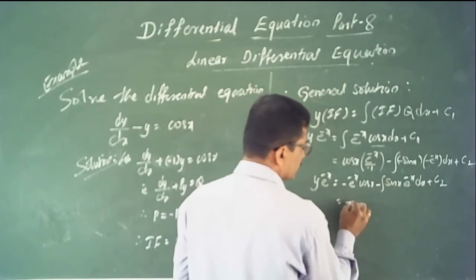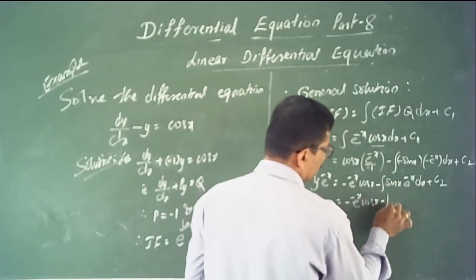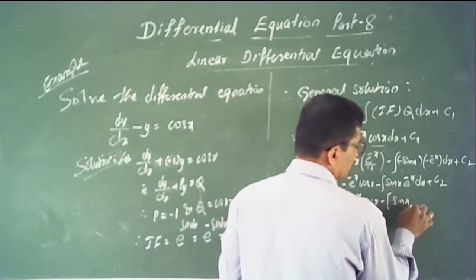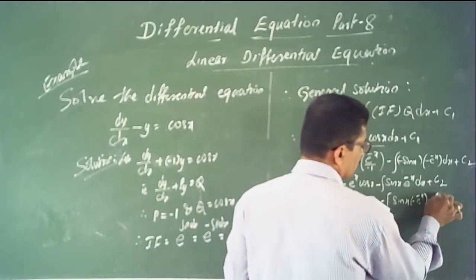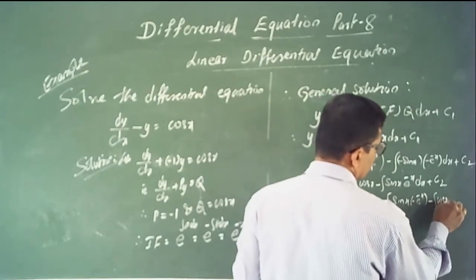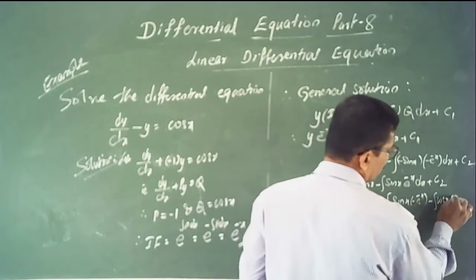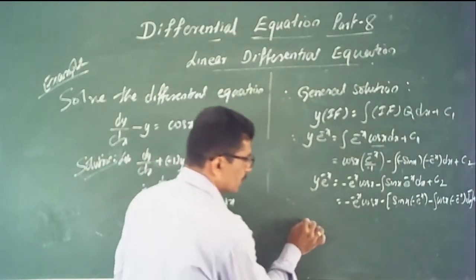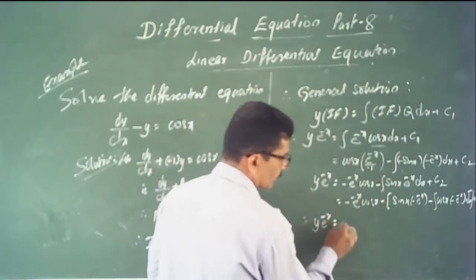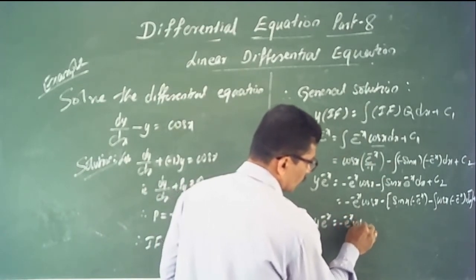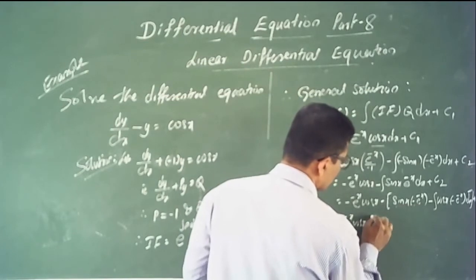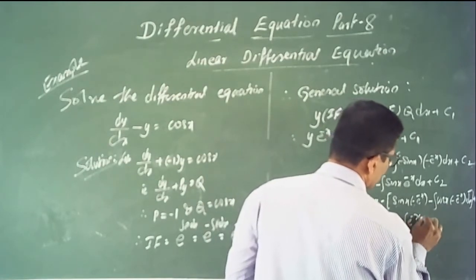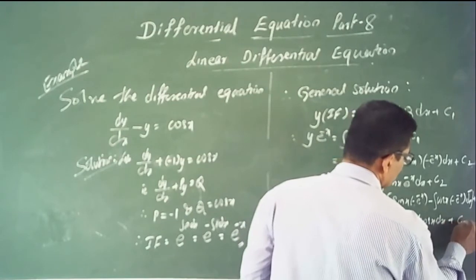Apply integration by parts again for ∫sin x · e^(−x) dx. First function is sin x; integration of e^(−x) is −e^(−x). The result is: −e^(−x)·cos x + [−e^(−x)·sin x − ∫e^(−x)·cos x dx] + C₃. Therefore y·e^(−x) = −e^(−x)·cos x + e^(−x)·sin x − ∫e^(−x)·cos x dx + C₃.